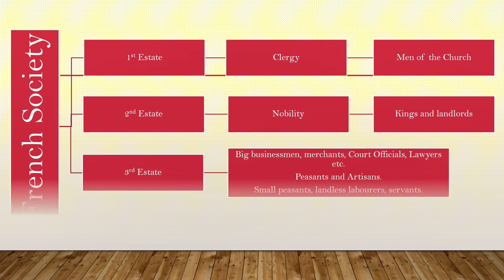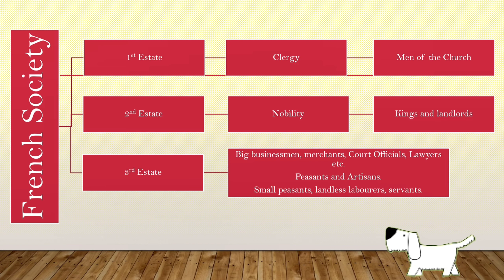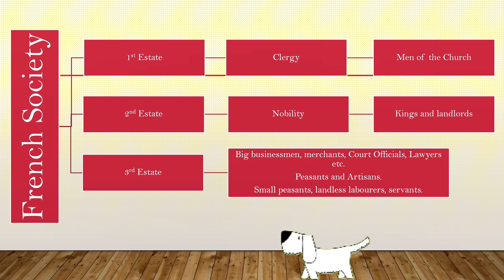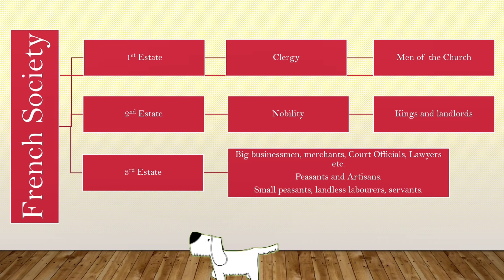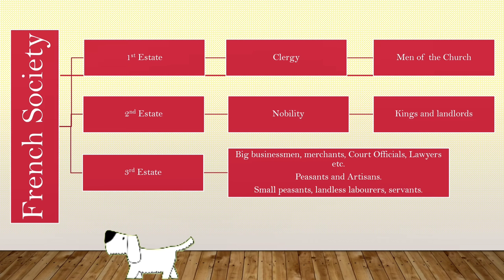Then we looked at the social structure of France. This was a society of estates, bifurcated into three categories. The first estate were the clergy, the second estate were the nobility, and the third estate were the commoners.